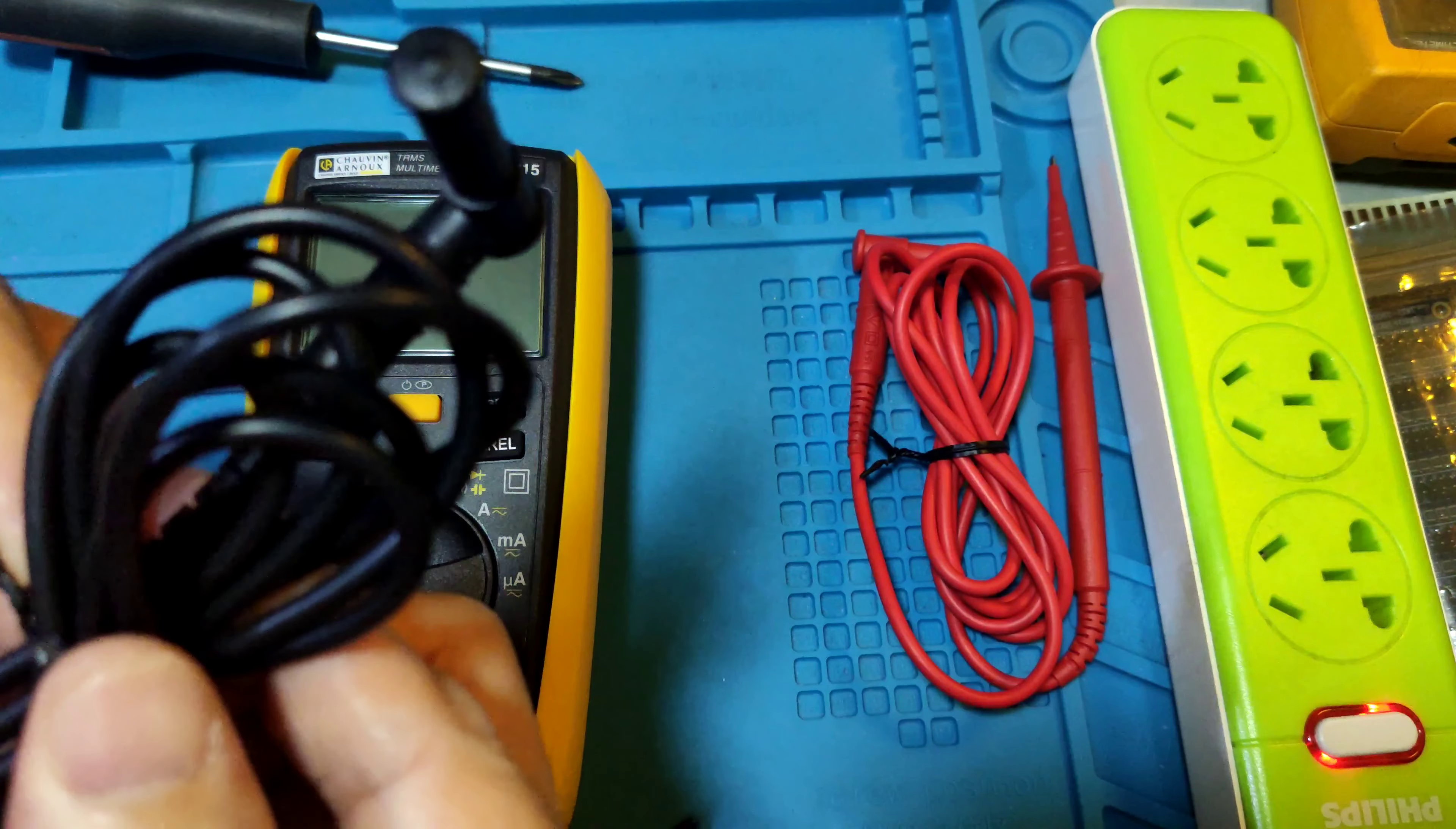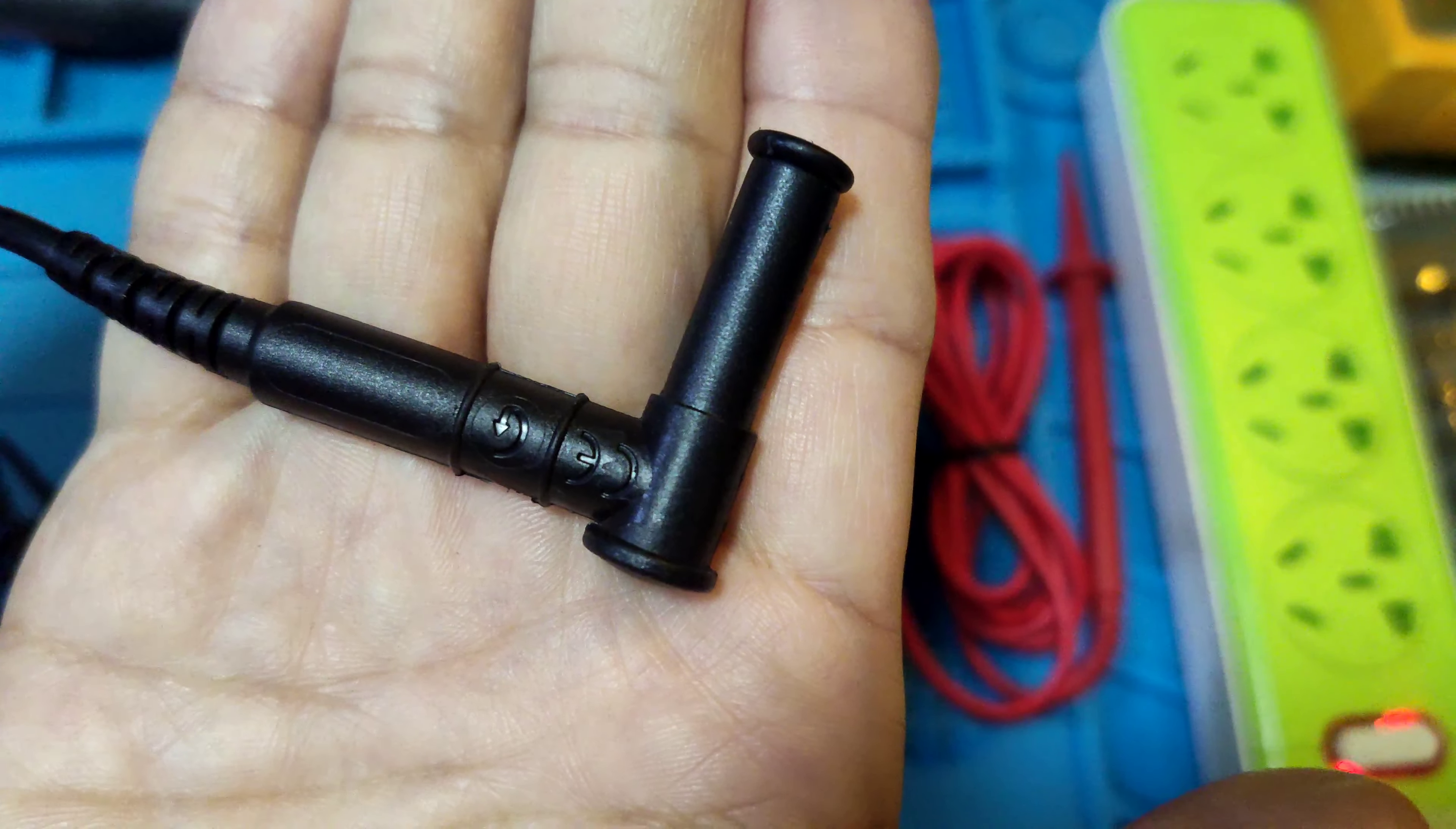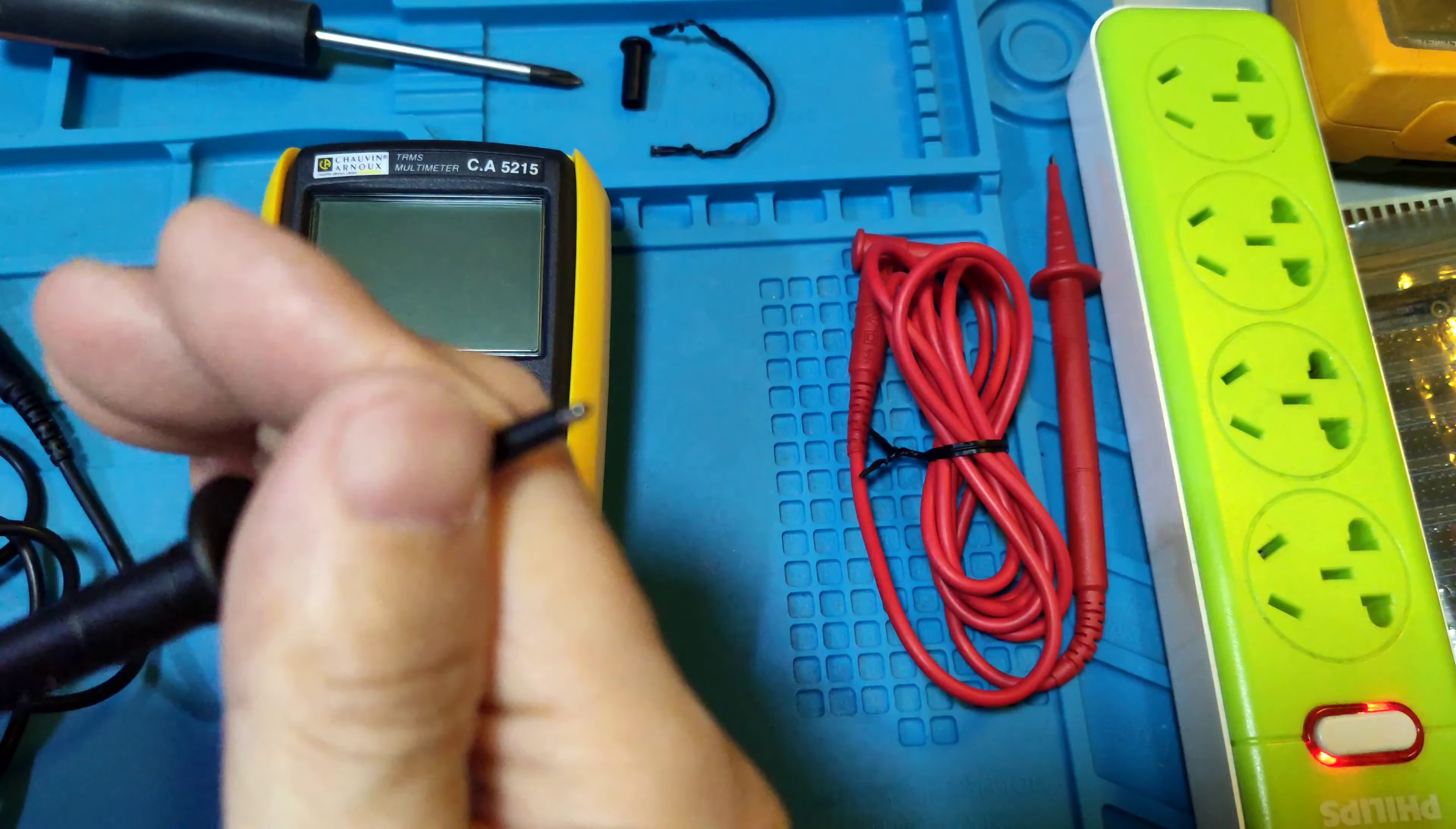Let's see the test lead cable. It's a soft PVC cable 50A. It uses a normal 4mm plug. The plug inside has protection insulation and the cable is also very soft.